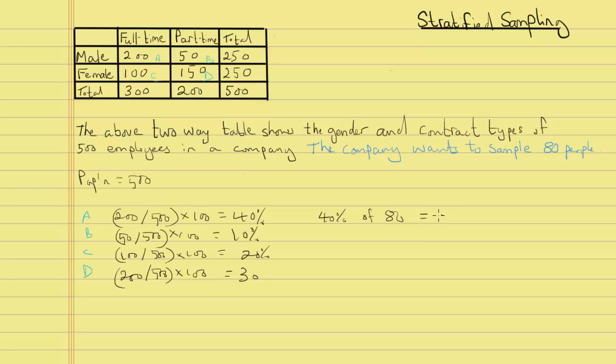This can be written as 0.4 times 80 which gives us 32. For group B we want 10% of 80, so 0.1 multiplied by 80 gives us 8. For group C we want 20% of 80 which is 0.2 multiplied by 80 giving us 16. And for group D we want 30% of 80 which is 0.3 multiplied by 80 giving us 24.